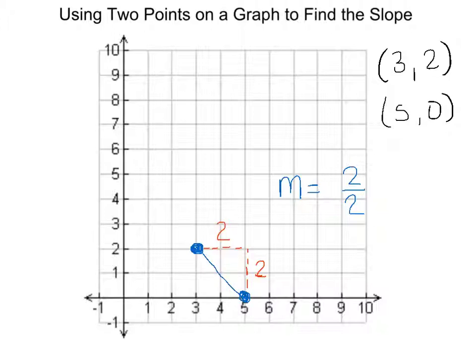So our line is moving from left to right in a downward fashion. That's important for later. In the meantime, we need to find the slope. Again, the slope is the rise over the run.